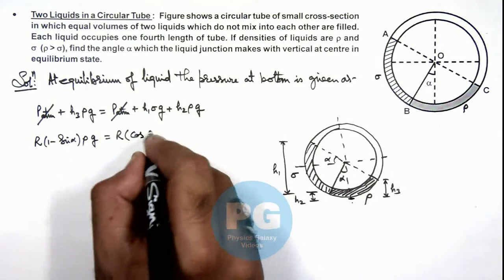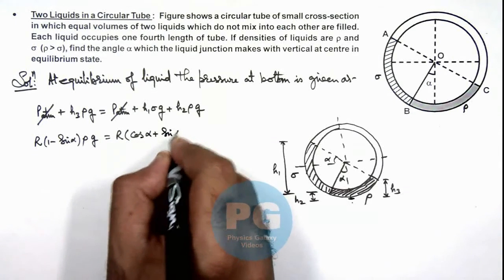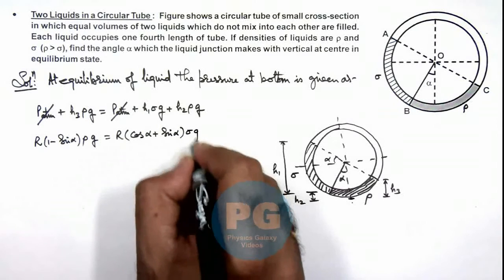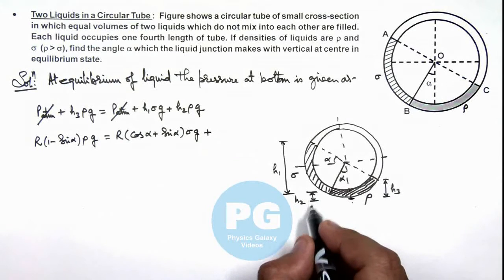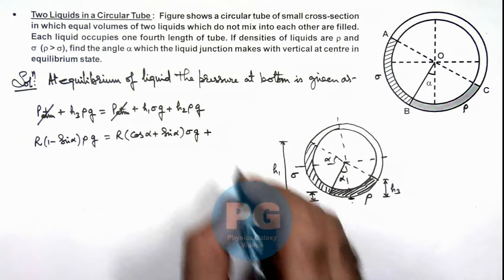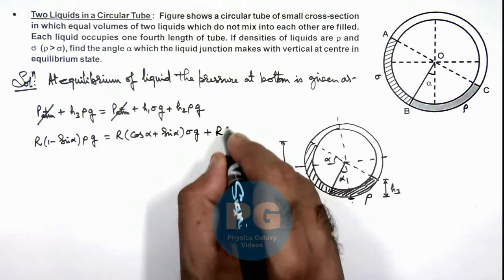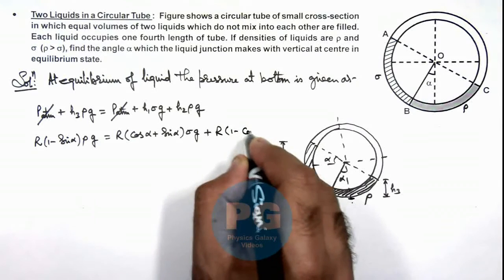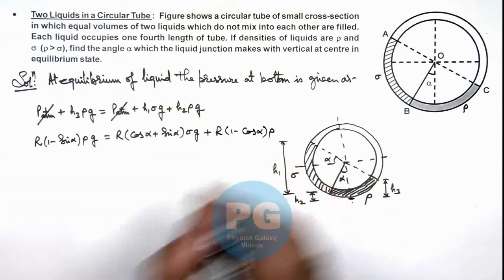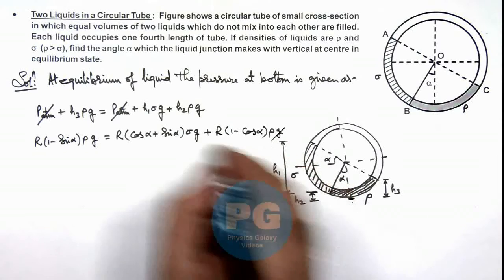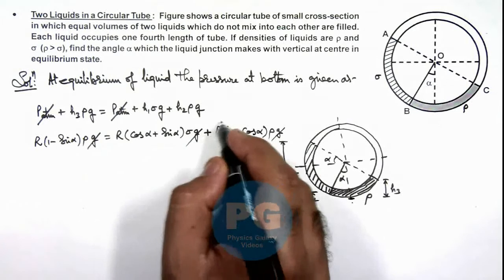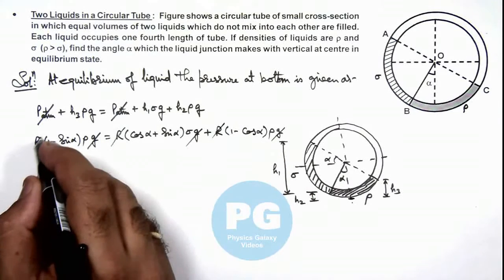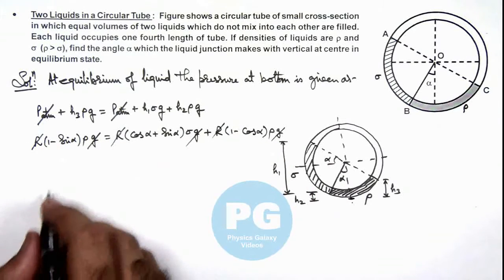Plus, if we get the value of h₂, here you can see this is r(1 - cos α) multiplied by ρg. Here g also gets cancelled out in this equation, and r also gets cancelled out. And here if we simplify this relation...